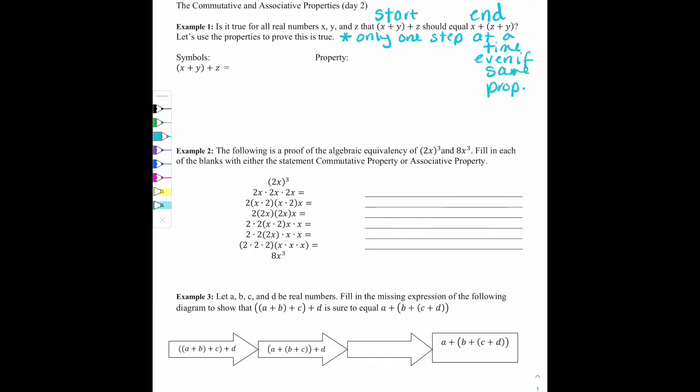So if I see something like (x+y)+z, I'm trying to make moves, one move at a time, one property at a time, to make it look like the end point. So one thing I noticed looking from beginning to end is that originally the x and the y are together in parentheses, and at the end the z and the y are together in parentheses. And I also noticed that it used to go x, y, z, and now it goes x, z, y.